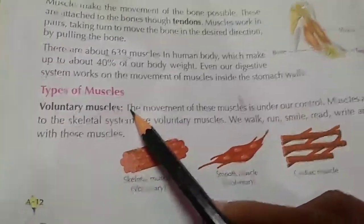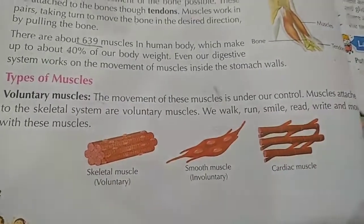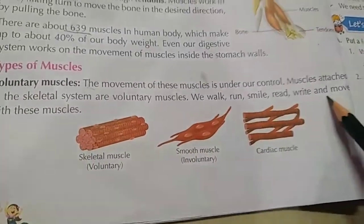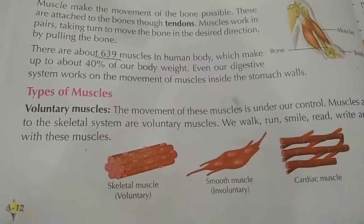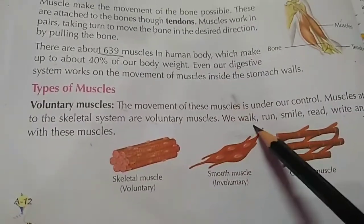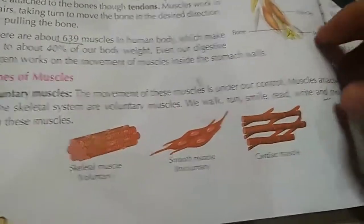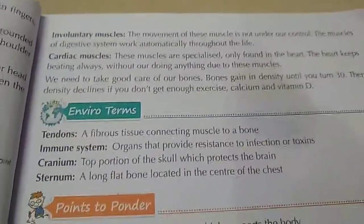There are three types of muscles. The first one is voluntary muscles — the movement of these muscles is under our control, and they are attached to the skeleton system. Actions like walking, running, smiling, reading, and writing all happen through voluntary muscles. These are processes that happen by our own will.